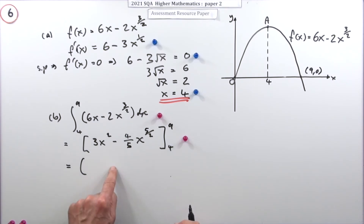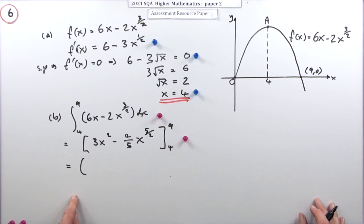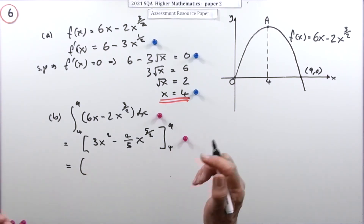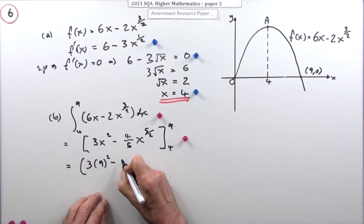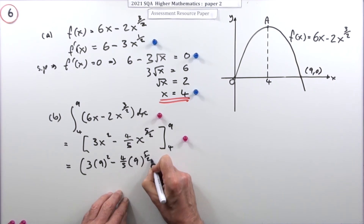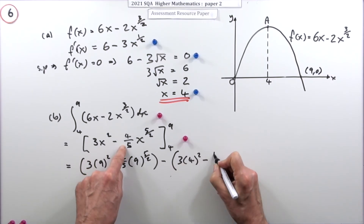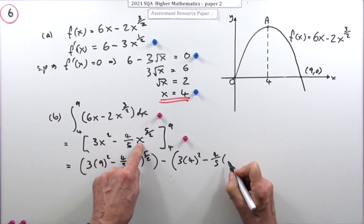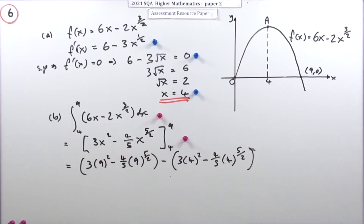The next mark is for substituting in the values. Substituting x = 9: 3 times 9² minus (4/5) times 9^(5/2). Minus substituting x = 4: 3 times 4² minus (4/5) times 4^(5/2). That substitution gets a mark, and the last mark is for the correct final answer.